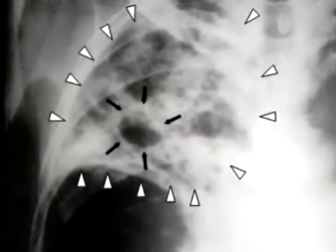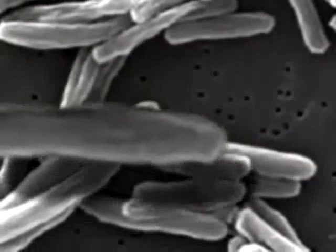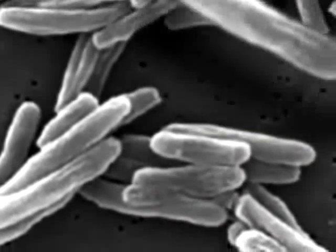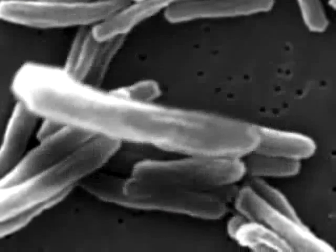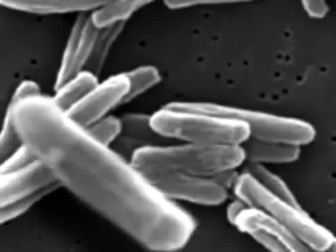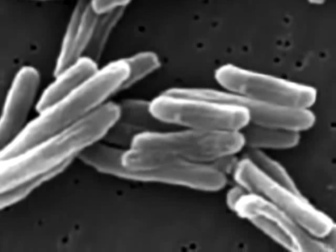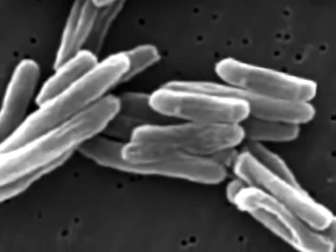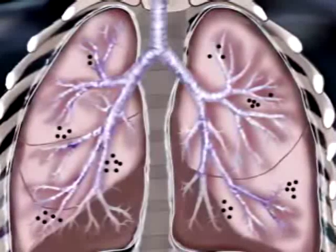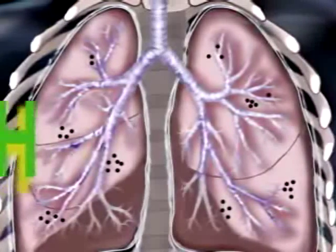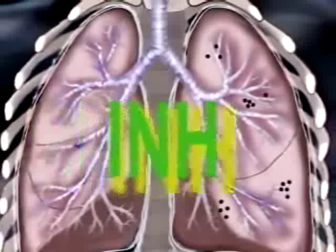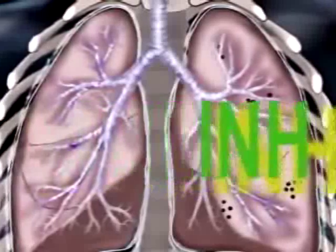The tubercle bacillus organism has unique properties that influence both the disease process and drug therapy. It multiplies slowly and may lie dormant in the body for years, being encapsulated or walled off in calcified tubercles. When dormant, it exists in sufficiently low numbers that it can be successfully treated with one drug, usually INH.